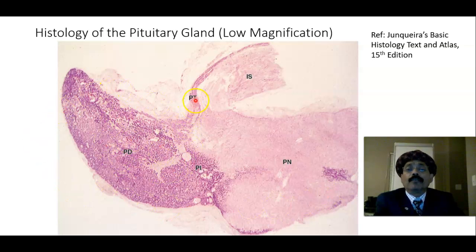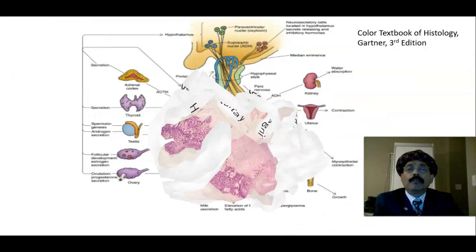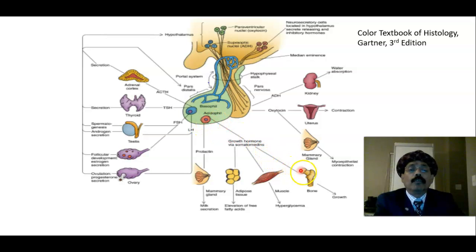In the pars distalis and pars tuberalis we find acidophil cells and basophil cells, each releasing specific hormones. From the acidophil cells we get the growth hormone and the lactogenic hormone — prolactin. The acidophil cells are present in the pars distalis part of the anterior pituitary. Growth hormone works on bones, muscles, and adipocytes, while prolactin works on the breast.